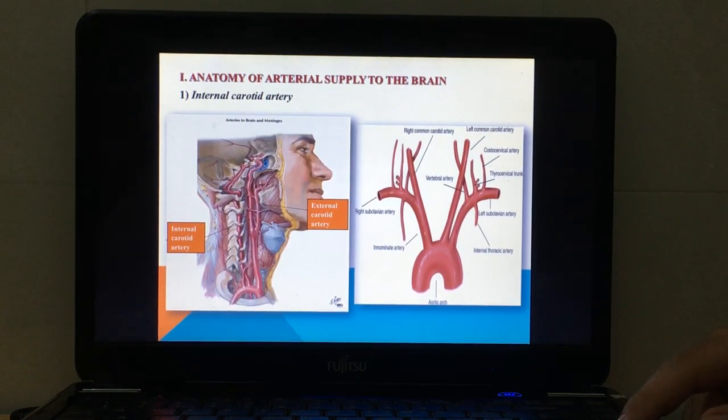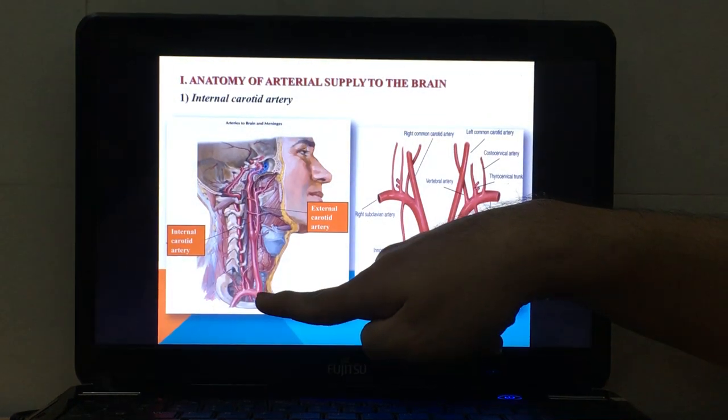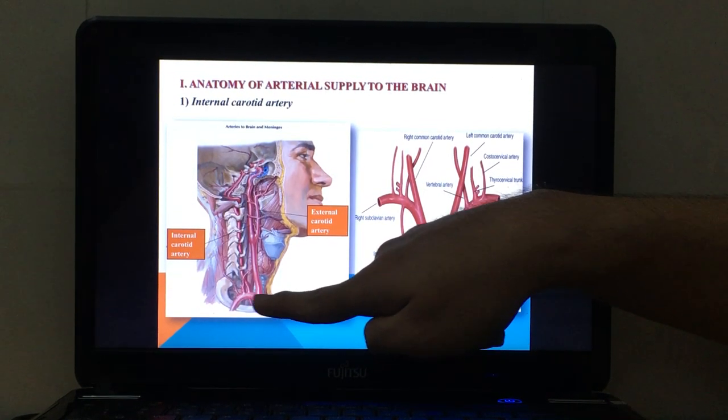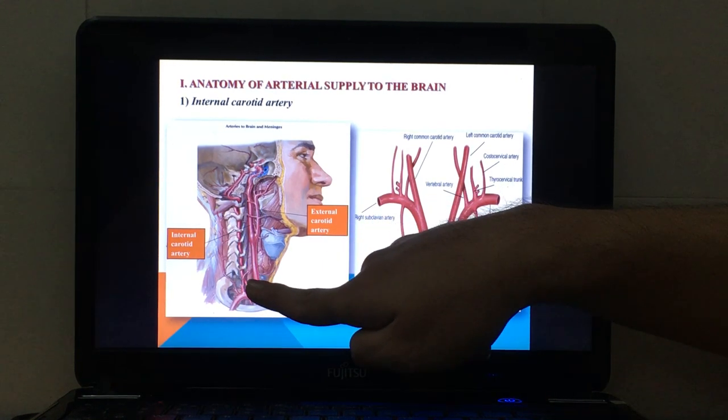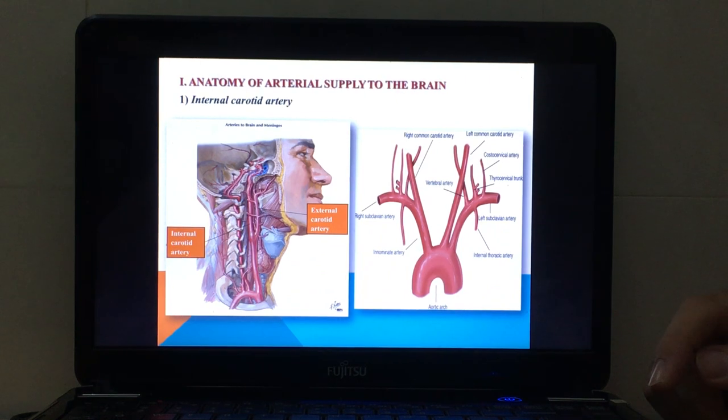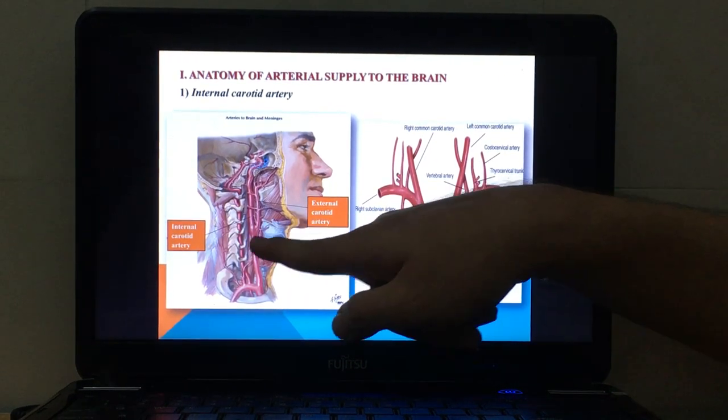This is the lateral view from the right side because we can see a part of the brachiocephalic trunk here. This is the right common carotid and this is the right subclavian artery.